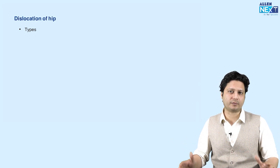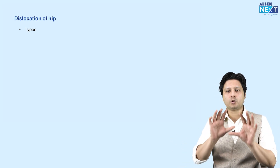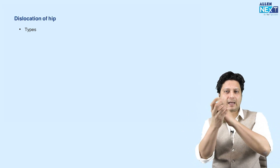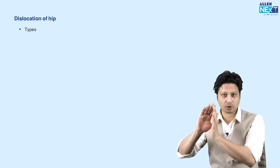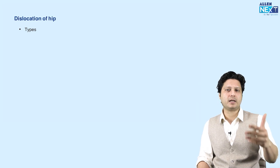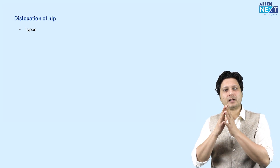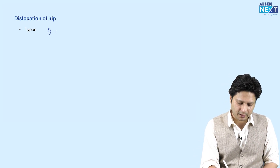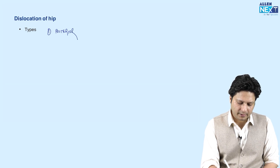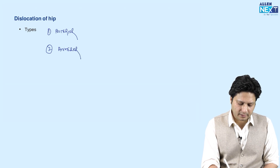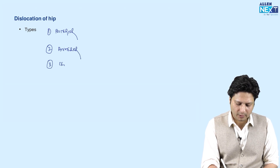Dislocation of the hip means the head of the femur is out of the acetabular cavity — that is dislocation of the hip joint. Out of multiple varieties and directions in which the hip joint could be dislocated, there are three important types: the first is posterior dislocation, the second is anterior dislocation, and the third is central dislocation of the hip joint.